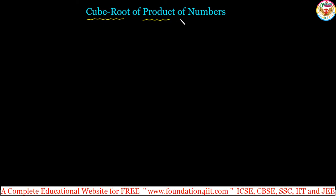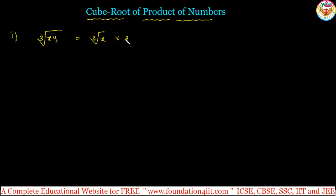Cube root of product of numbers. To find out the cube root of a product of numbers, we have simple formulas. We can write cube root of x into y and separate this as cube root of x into cube root of y.